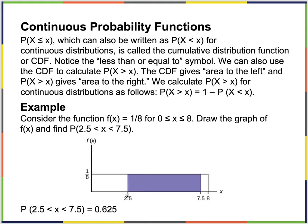Consider this example: the height is 1/8 and we go from 0 to 8. Taking 8 times 1/8 equals 1, so this is a valid probability density function. It's continuous because between any two points there's an infinite number of values. I can also calculate the probability of X being between 2.5 and 7.5.